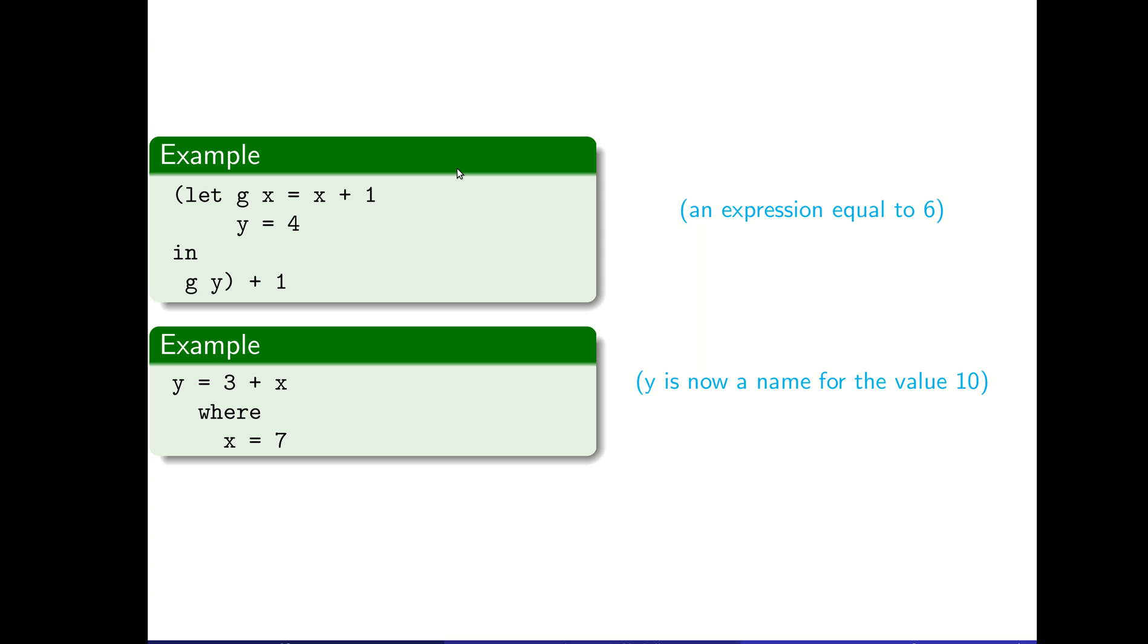I mentioned there's an actual practical difference between the two. Here we have a let statement being used in a calculation. We let g of x equal x plus 1, we let y equal 4. You can define multiple things in a let statement in one go. We let g of x equal x plus 1, let y equal 4 in g of y, which gives us 4 plus 1, also known as 5, as a result. Because the let statement itself is an expression that can result in a value, it results in 5. We add 1, so this whole example is an expression equal to the number 6.